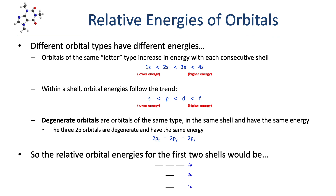We can use this information to predict the relative energies of orbitals for a specific atom. For carbon — a second-row element with first and second shell orbitals — we know the 1S orbital is lower in energy than the 2S orbital. Depicting orbitals as horizontal lines, we place the 1S lower on screen and the 2S above it. The 2P orbitals are higher in energy than 2S, and since the three 2P orbitals are degenerate, they're placed at the exact same height. This represents the orbital energy diagram for a second shell element like carbon.